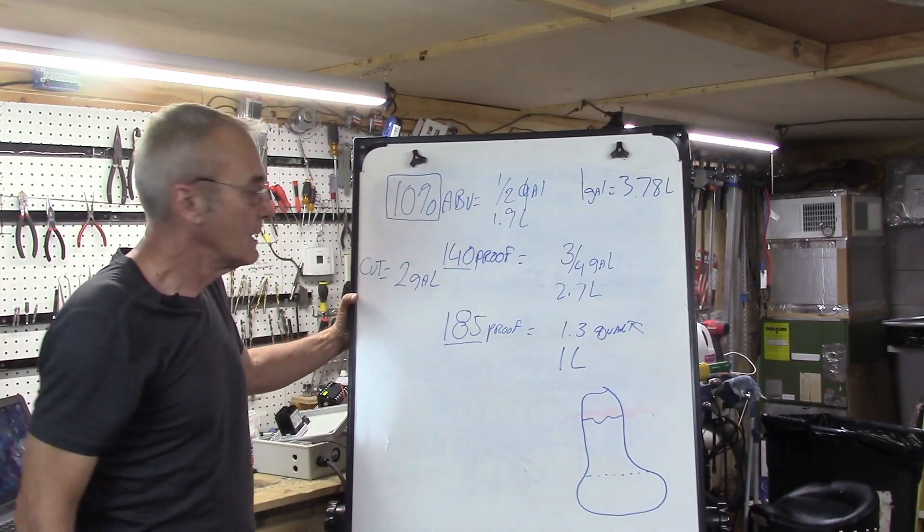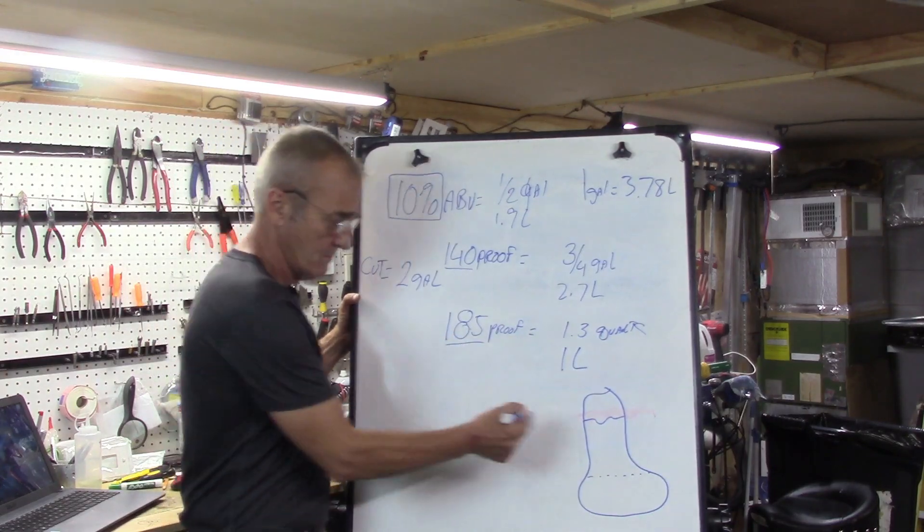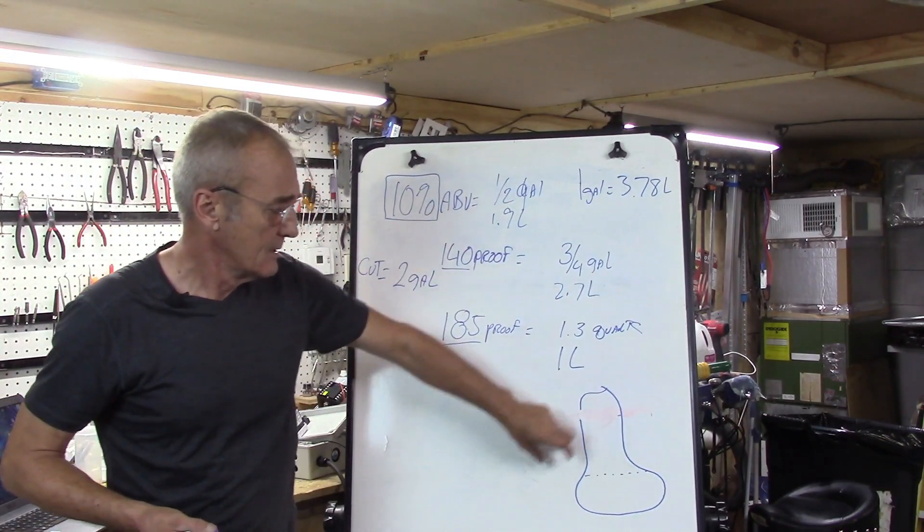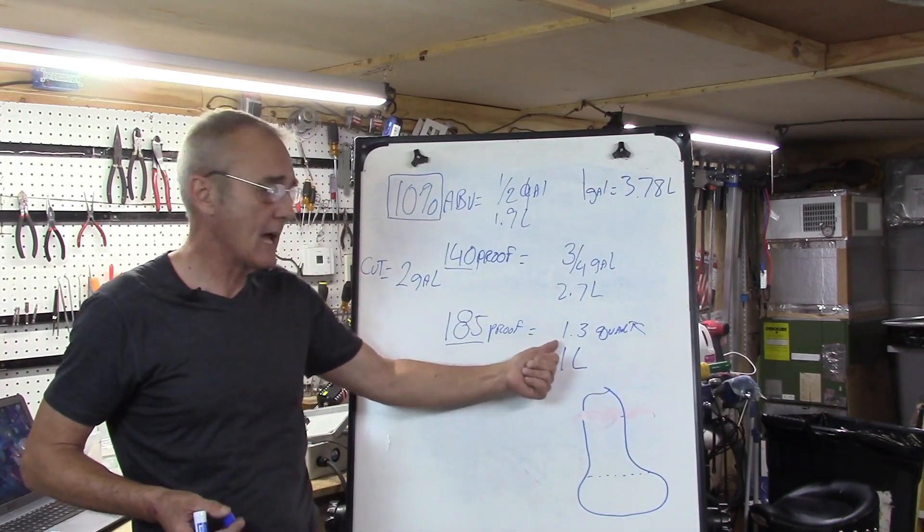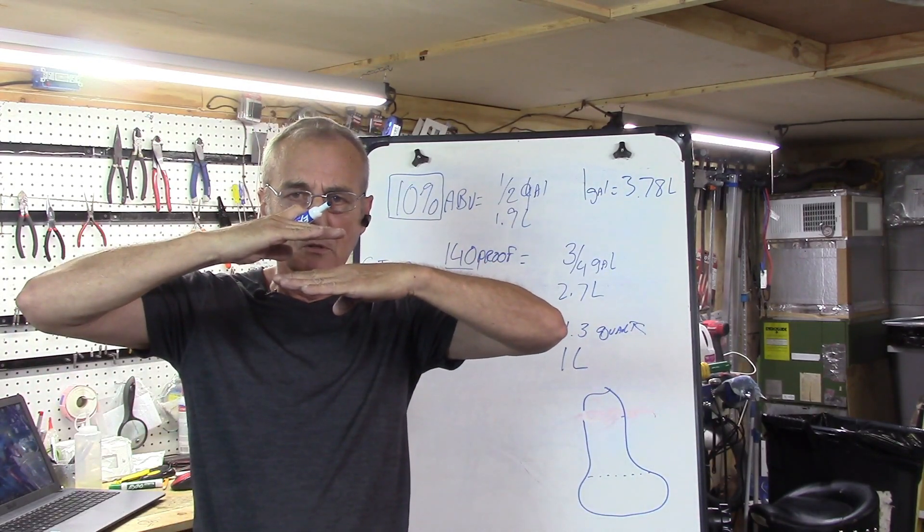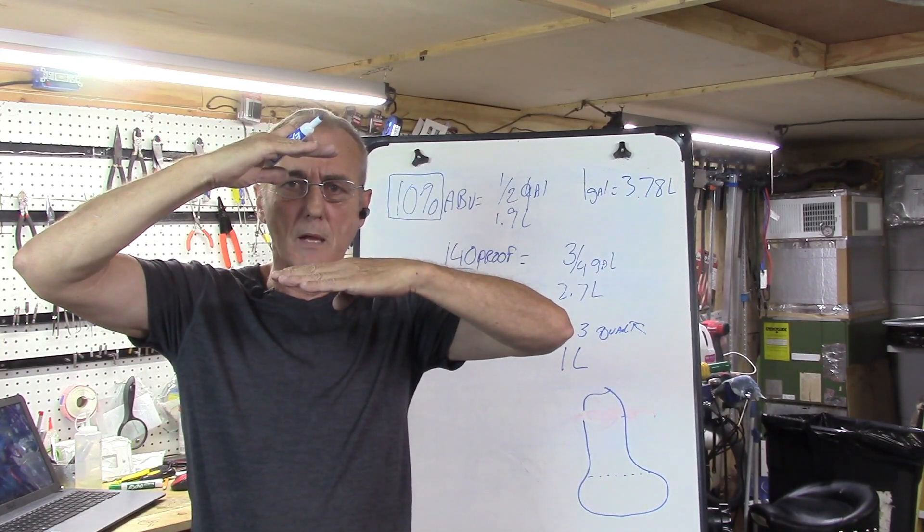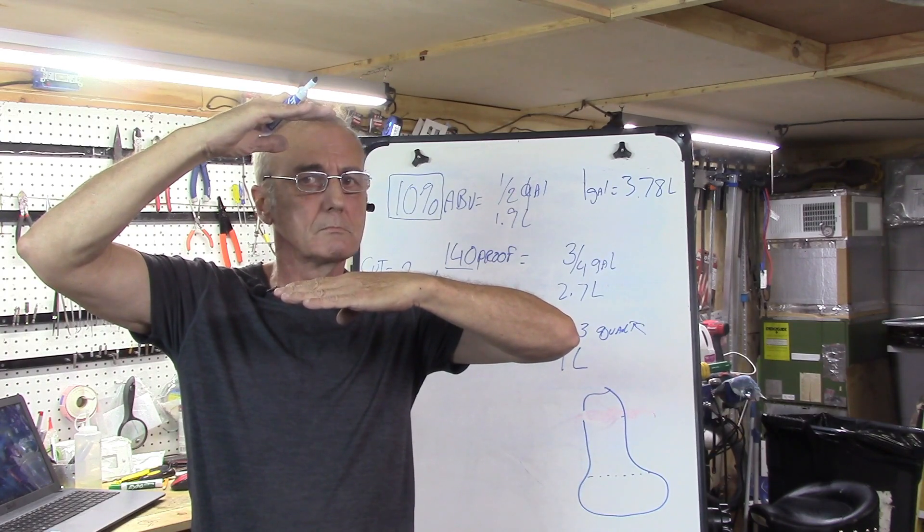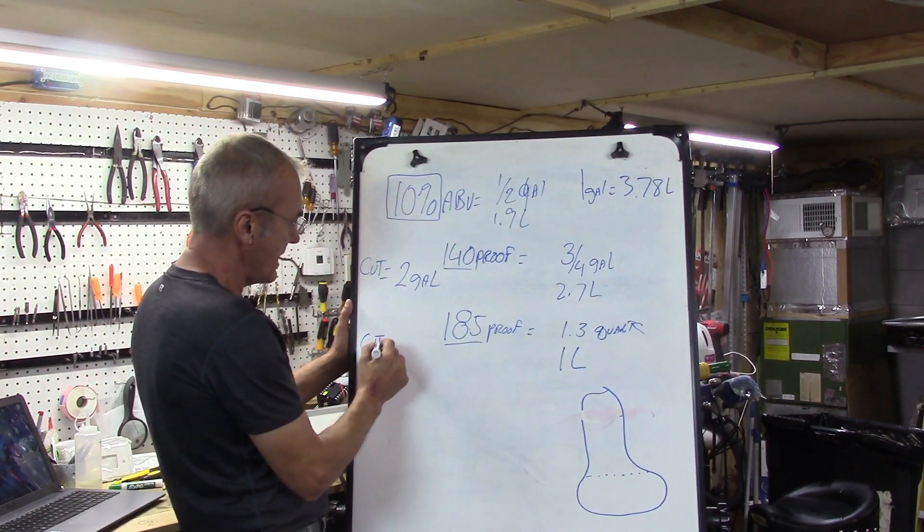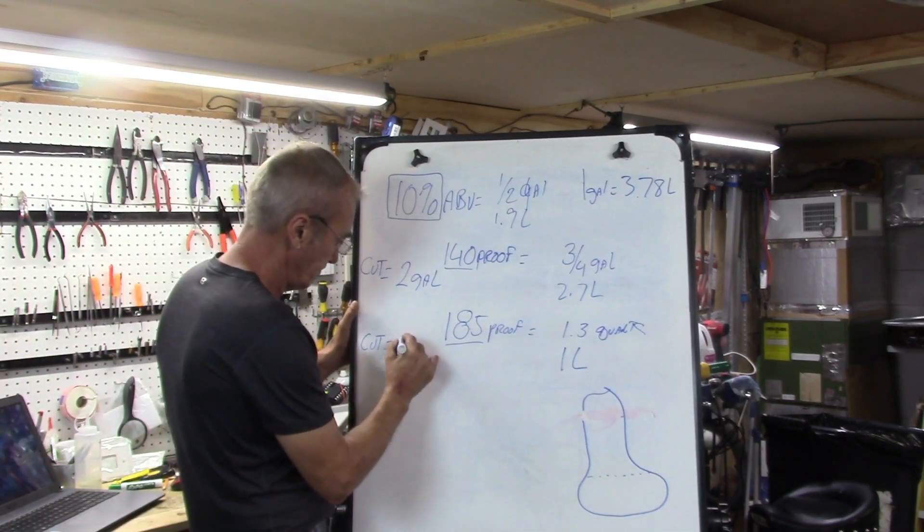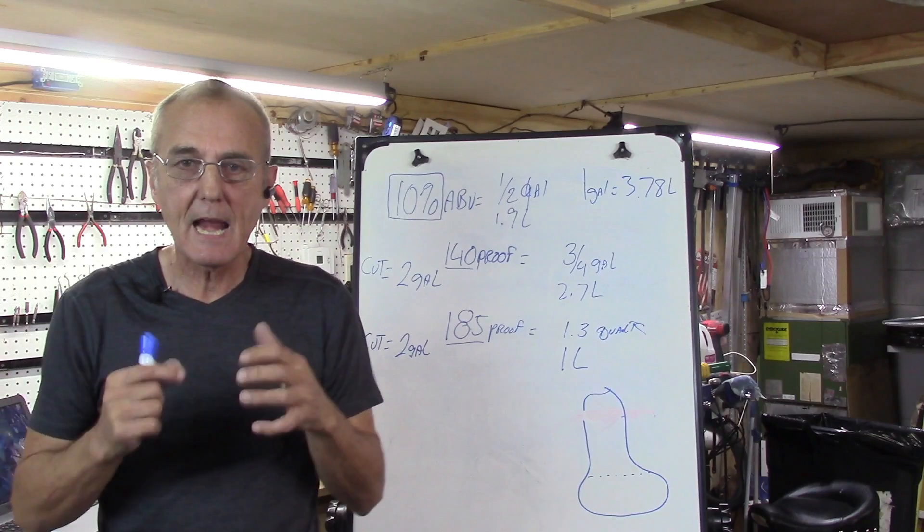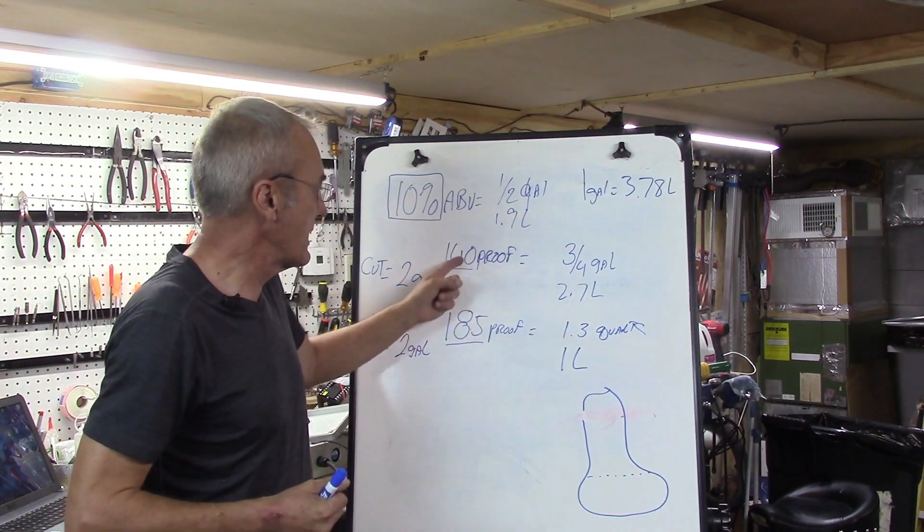So now let's take for example the 185 proof. Now see, our volume's a little lower but our proof is really really high. When we talked about that, it's only 7% of that is water. So now we're going to take that much alcohol, we're going to add that much water to it, and then we're going to make that much. You see how that works? It's plain and simple, it's direct. When we cut this to 80 proof we're going to end up with a whopping two gallons.